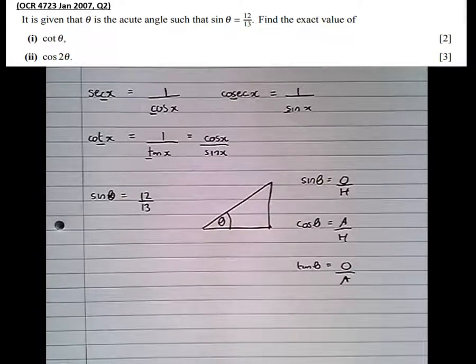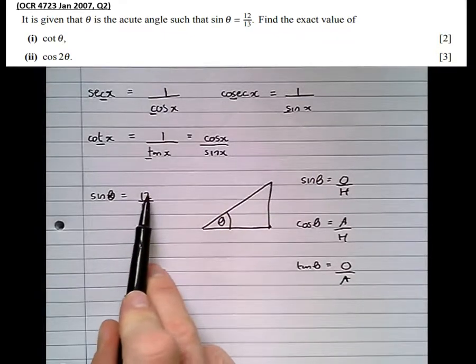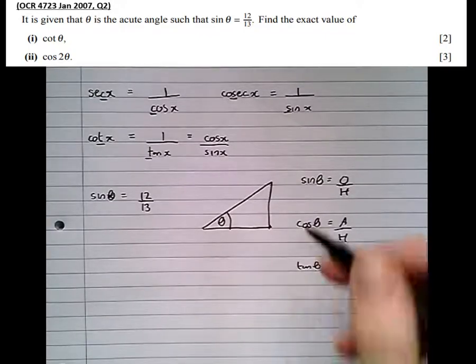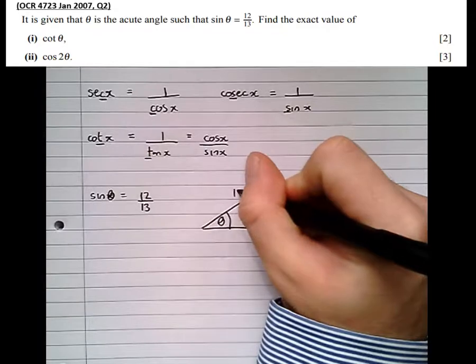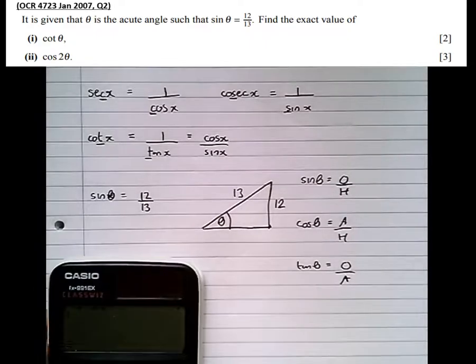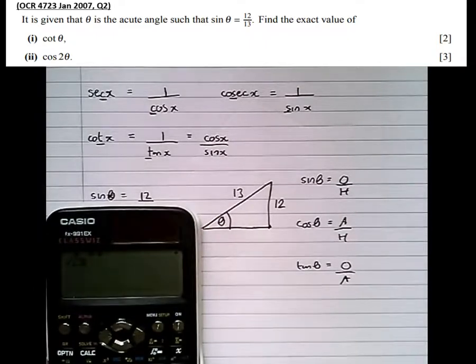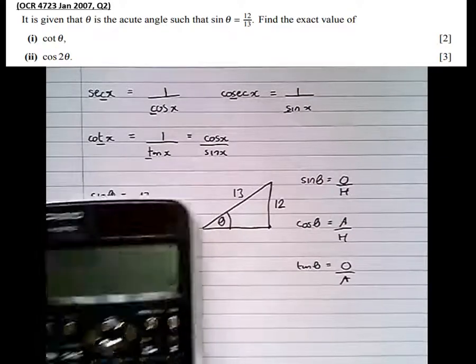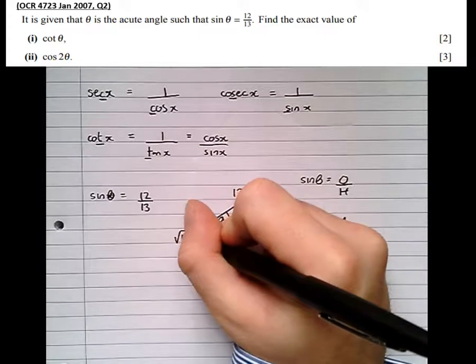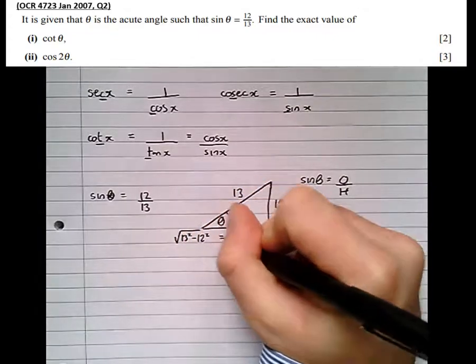We can see here that sine theta is 12/13, so the opposite over the hypotenuse is 12/13. From that, we can then work out what the third side is using Pythagoras: the square root of 13 squared take 12 squared is 5.